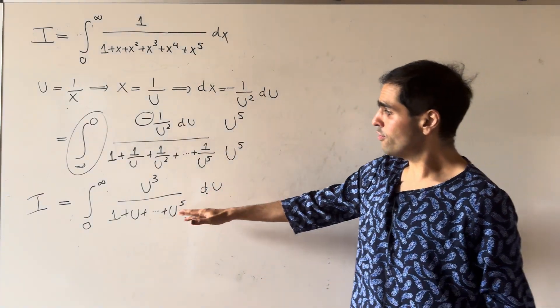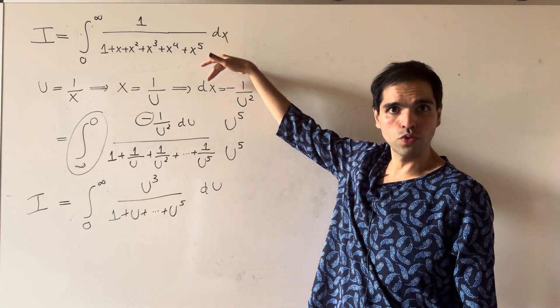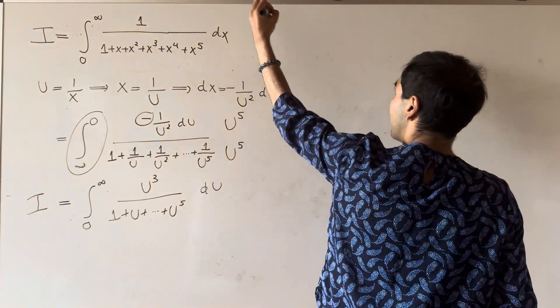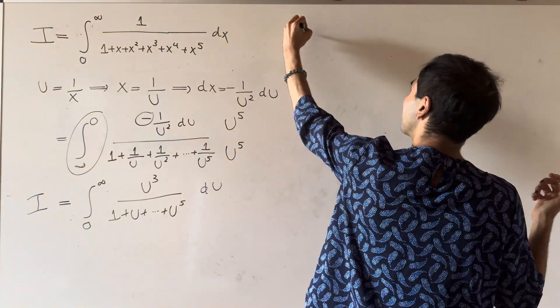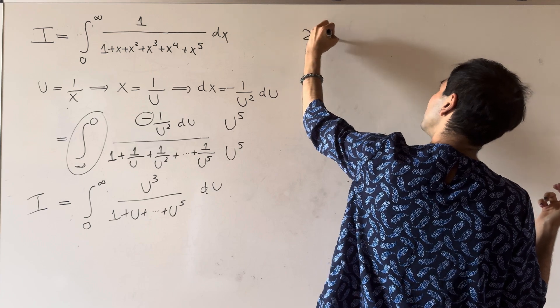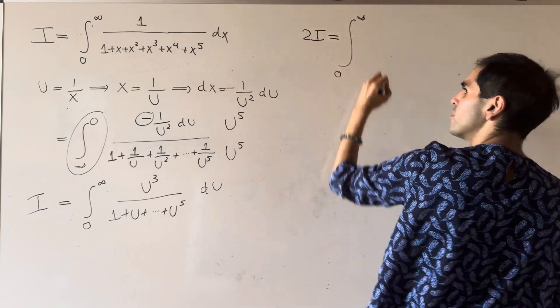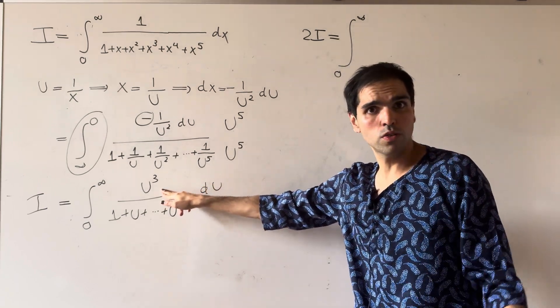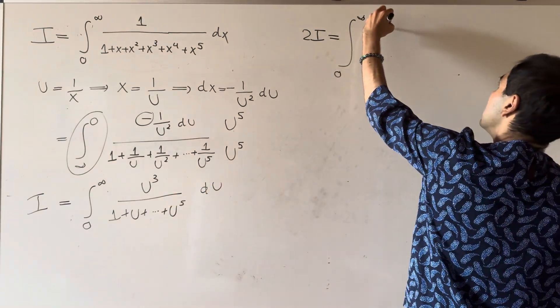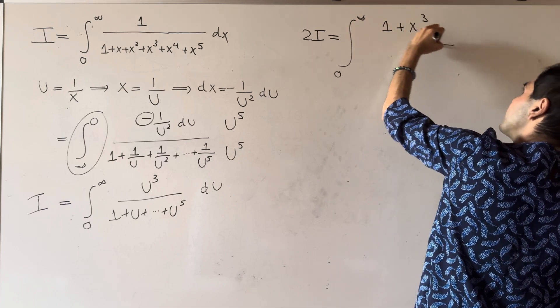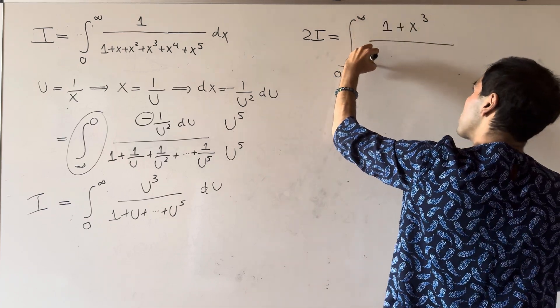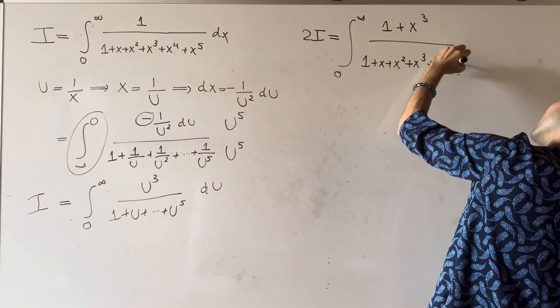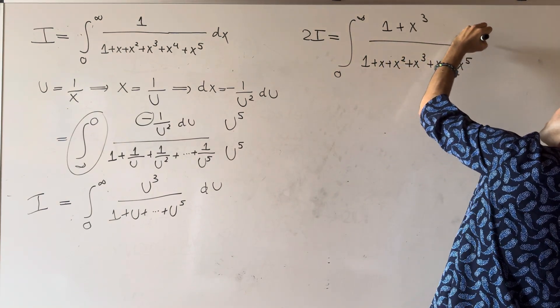Now, here's a beautiful thing. Because those two integrals are so similar, let's just add them up and see what we get. So then I plus I becomes 2I, and that's the integral from 0 to infinity of 1 plus x cubed over 1 plus x plus x squared plus x cubed plus x to the 4th plus x to the 5th dx.